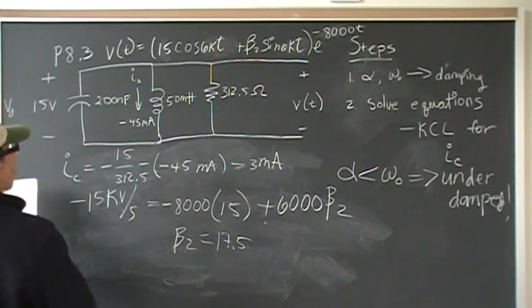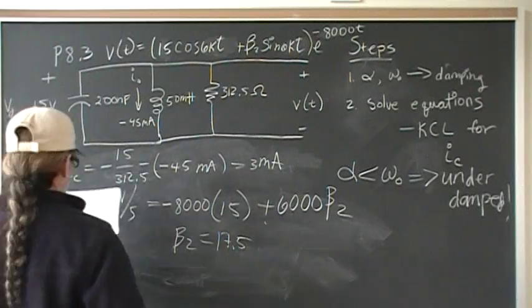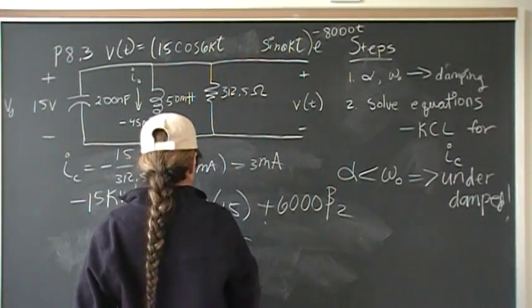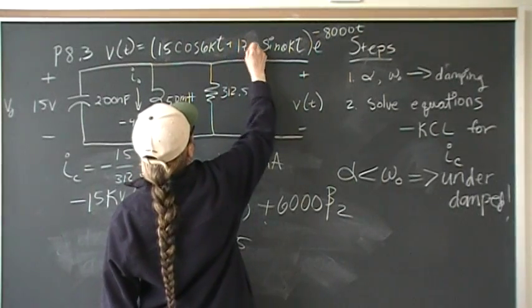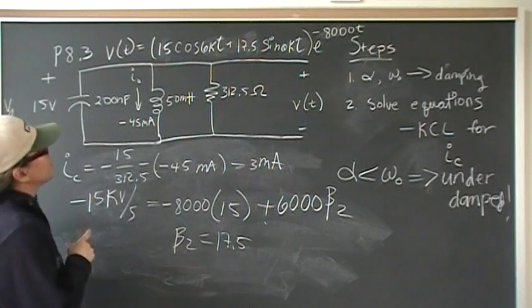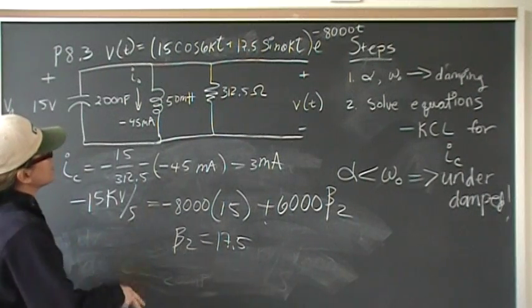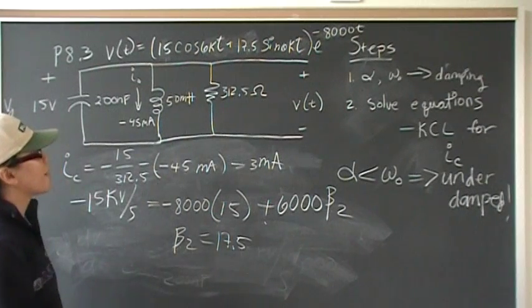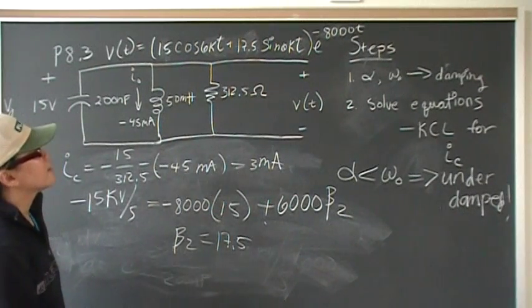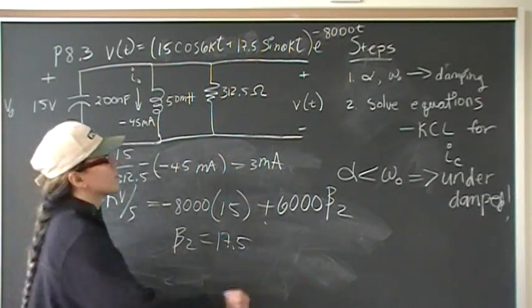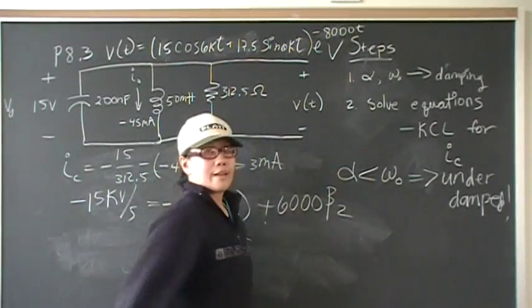Okay, so we plug that into here, and we have the final voltage to be 15, the quantity, in parentheses, to be 15 cosine 6,000t plus 17.5 sine 6,000t times, all that times, e to the negative 8,000t volts. Thanks.